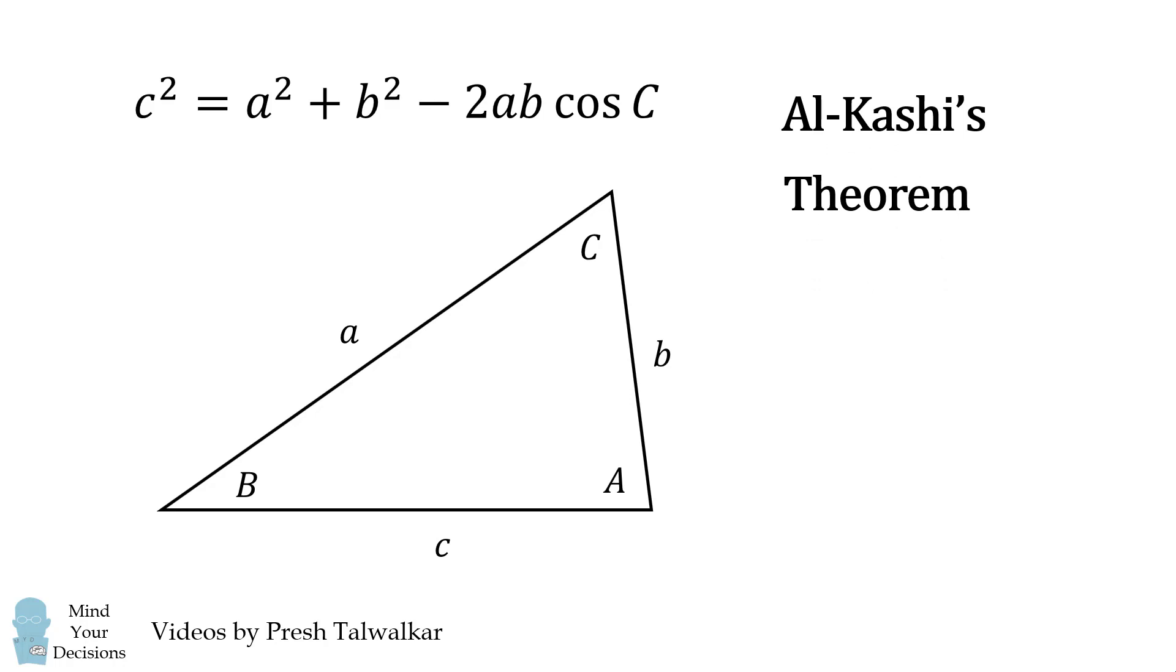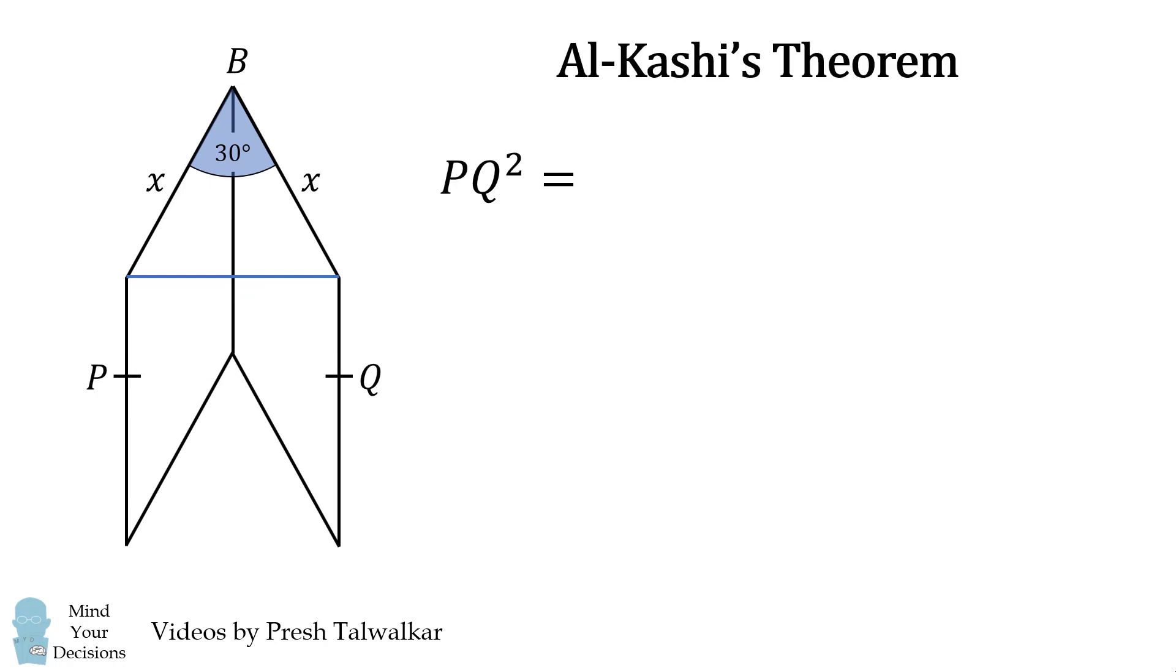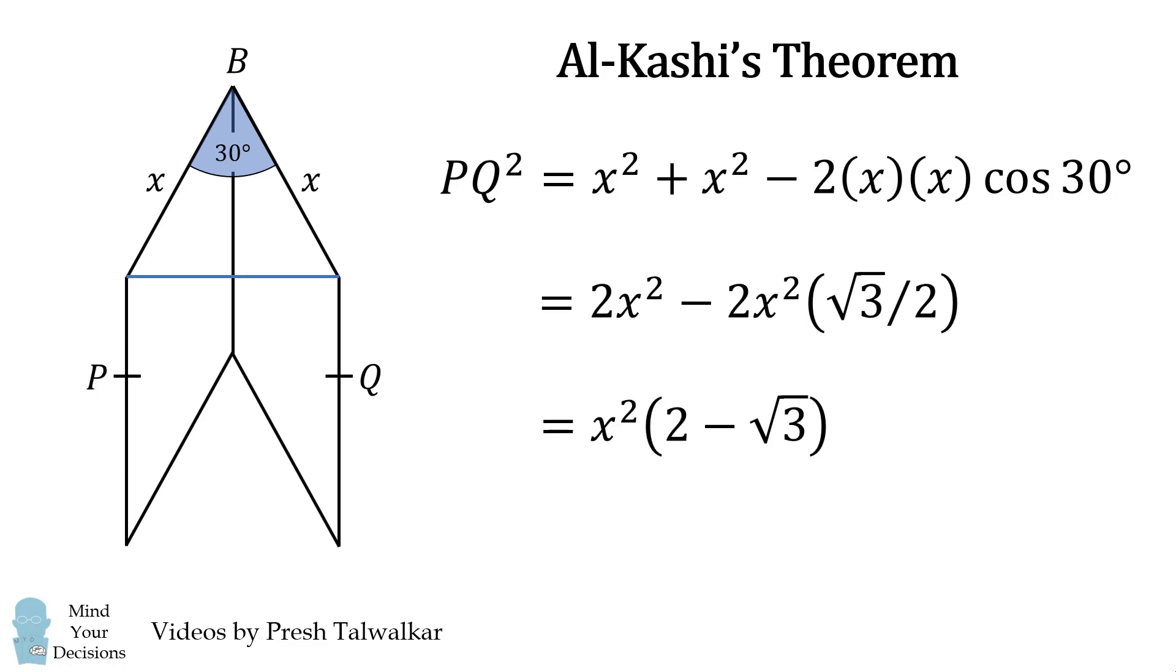So this problem is all about Al-Kashi's theorem. Let's get started. We're first going to solve for PQ². To do that, we'll translate this length vertically so that we form a triangle. Now, using the theorem of Al-Kashi, we get PQ² = x² + x² - 2x·x·cos(30°). We simplify and factor this to get PQ² = x²(2 - √3).